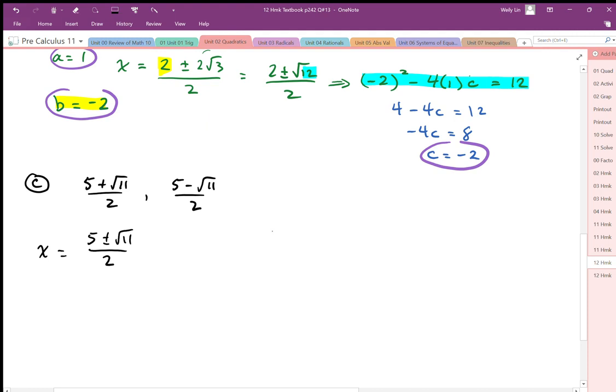So again, I'm just going to write the quadratic formula form: negative b plus minus the square root of b squared minus 4ac all over 2a, and we're going to try to match the parts here.